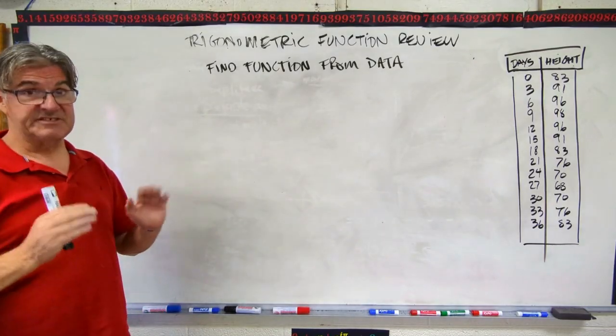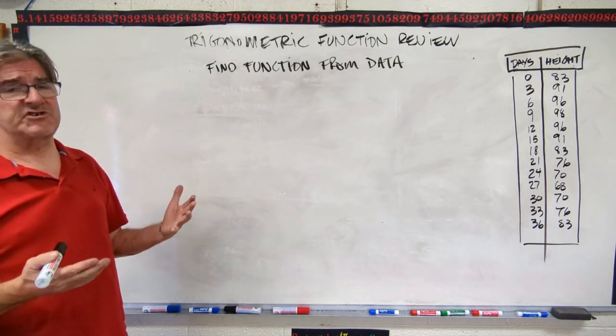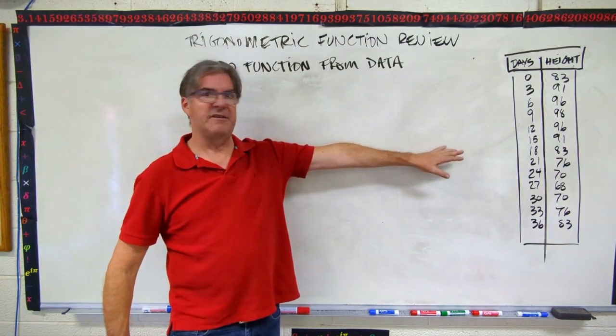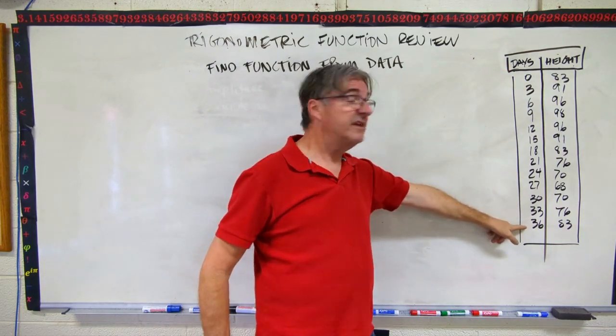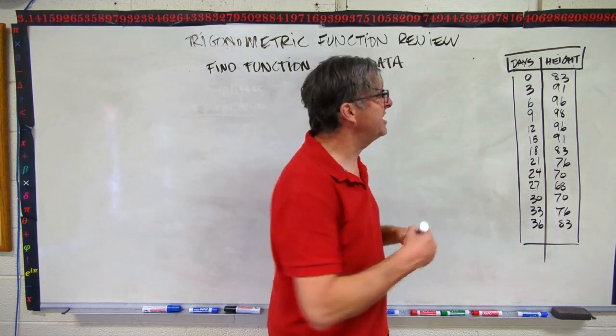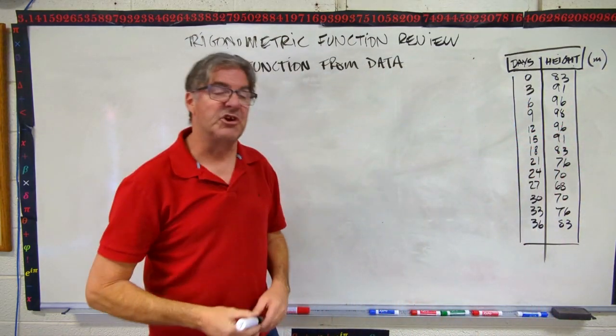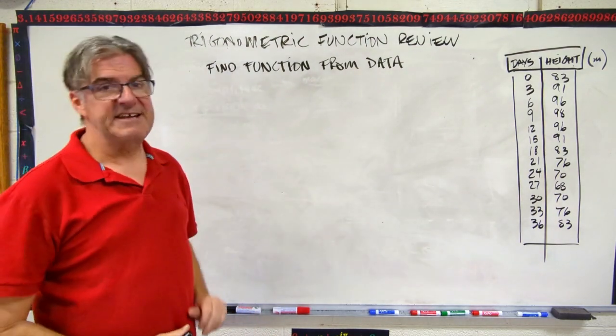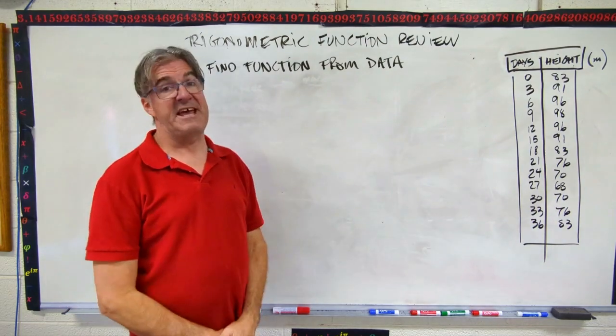Okay. In the last lesson of the three that we did, we built our trig function from data. So I've created some data here. I didn't invent a context for it. I just gave you data points. We have days going up to 36 days, and we have height measured as the numbers on there. And let's just say height is in meters just because it's a good idea to show your units. Okay. So based on that data, come up with a trig function that describes the data.